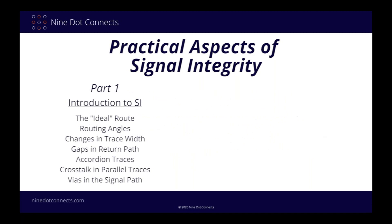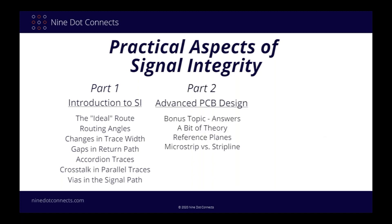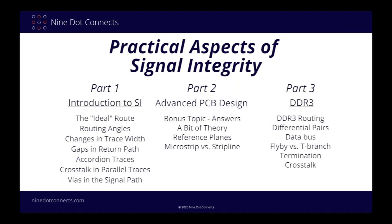I started off this webinar series by examining some basic concepts of signal integrity analysis, looking at the practical effects of trace widths, routing angles, vias, return current paths, and so forth. In part two, I looked at more advanced routing cases such as reference planes and stripline versus microstrip routing. In part three, I analyzed the implementation of a high-speed DDR3 memory design with topics including termination, clock routing, crosstalk, and flyby versus T-branch routing.